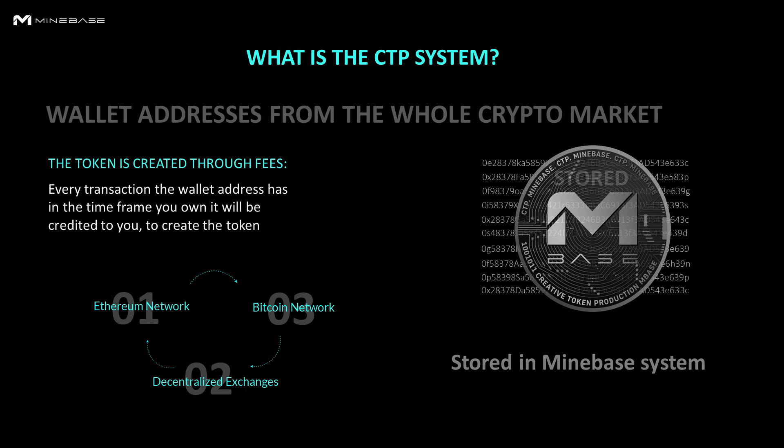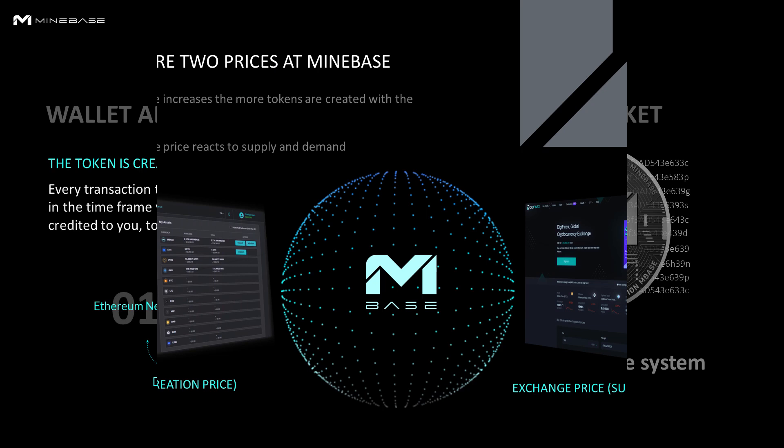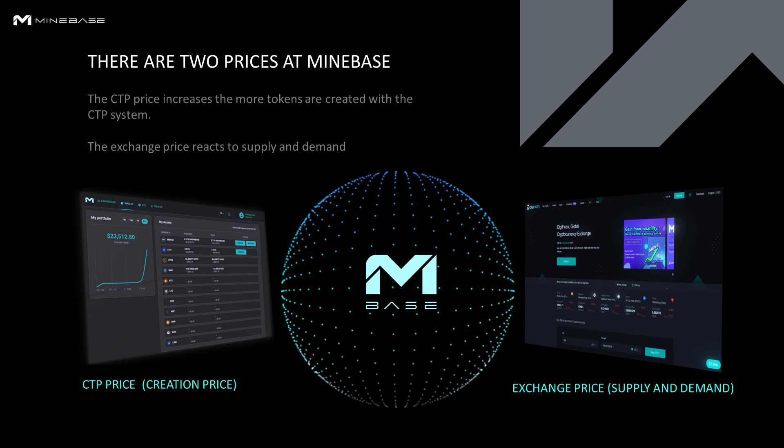We use the Ethereum network, the decentralized exchange, and the Bitcoin network. We store all wallet addresses in the Minebase system. There are two prices in the Minebase system: the first is the creation price, and the second is the exchange price. The creation price increases the more tokens are created with our CTP system, and the exchange price reacts to supply and demand.